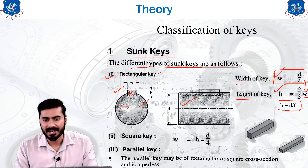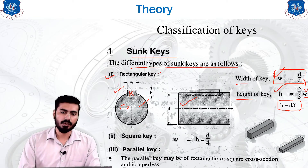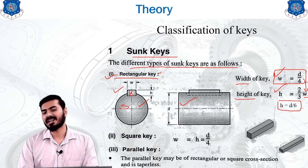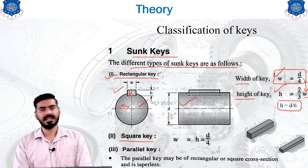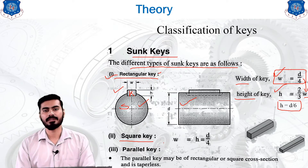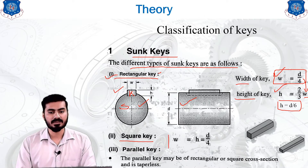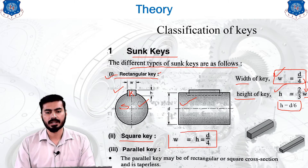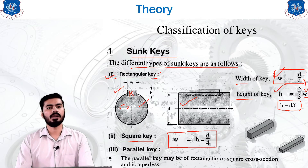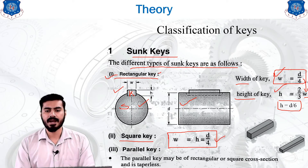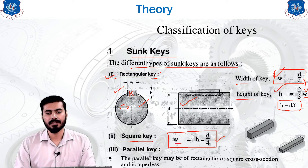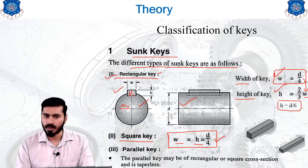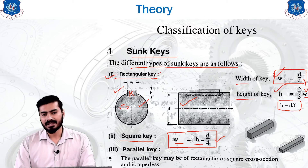The rectangular key is inserted into the shaft as shown in two different views in the diagram. Similarly, there is another type of sunk key: the square key. As the name indicates, the cross section is square, so width equals height — both equal to d/4. We do not need to calculate h from w using d/6.